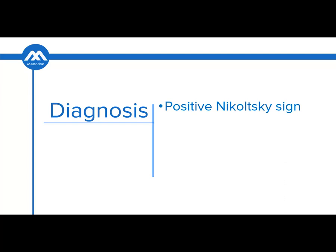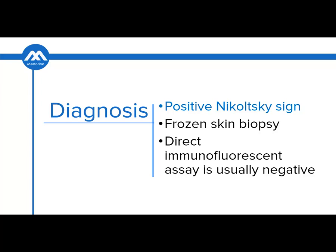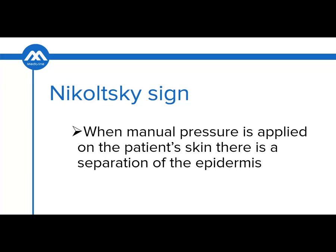How do we diagnose a patient with Steven Johnson syndrome? When conducting a physical examination, this patient will present with a positive Nikolsky sign, and a frozen skin biopsy is the one that will give a definitive diagnosis of Steven Johnson syndrome. A direct immunofluorescence assay will be negative in these patients. The Nikolsky sign is positive when you apply manual pressure on the patient's skin and there is a separation of the epidermis from the underlying dermis.